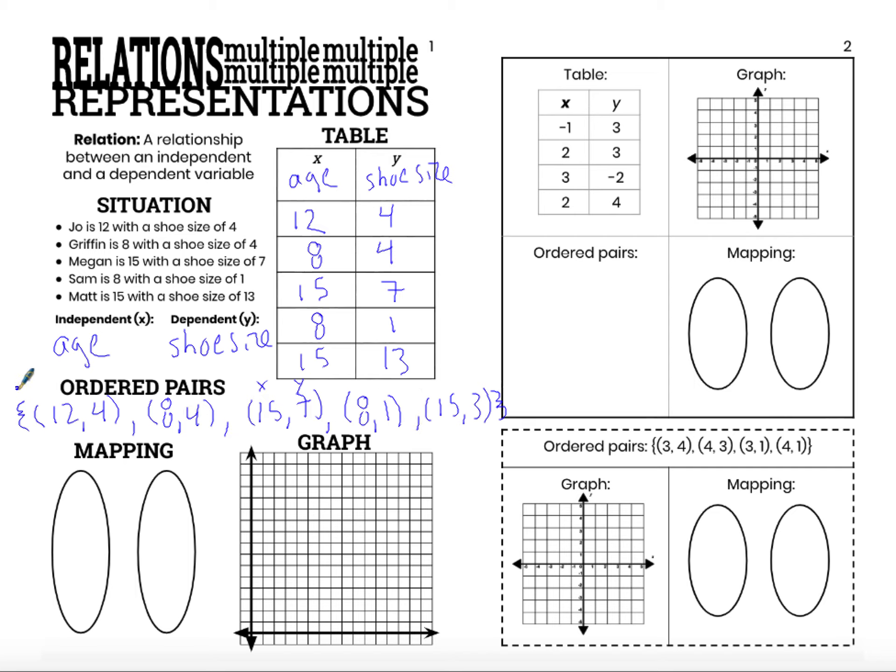Again, my relation is my entire set of this relationship. All the possible relationships between X and Y. We have a 12 and a 4 that go together, an 8 and a 4 that go together, 15 and a 7, 8 and 1, and 15 and 13. So my relation is the set of all of these pairings.